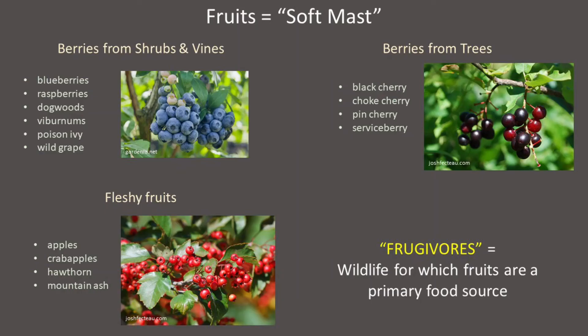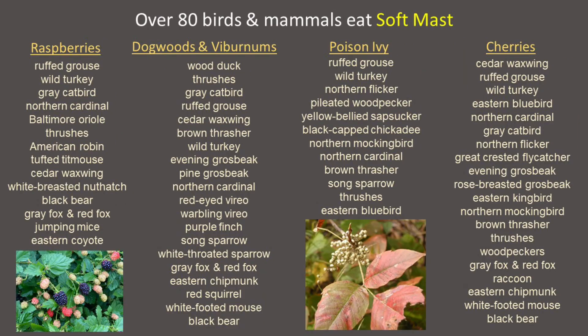Wildlife species that eat fruits as a large proportion of their diet are called frugivores. Cedar waxwings are a great example of a frugivore. Here in New England, a large variety of birds and mammals include soft mast in their diet.